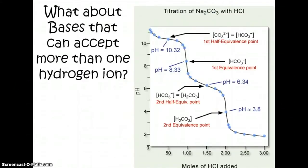Now, if you wanted to talk about a base that could accept more than one hydrogen ion, such as Na2CO3, so when you're looking at that, you're basically talking about the CO3 two minus, so it can accept two hydrogen ions.